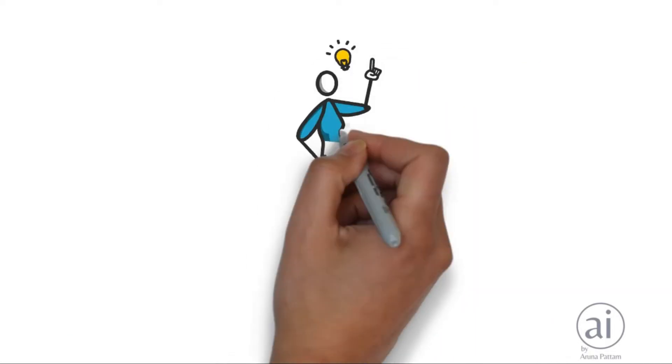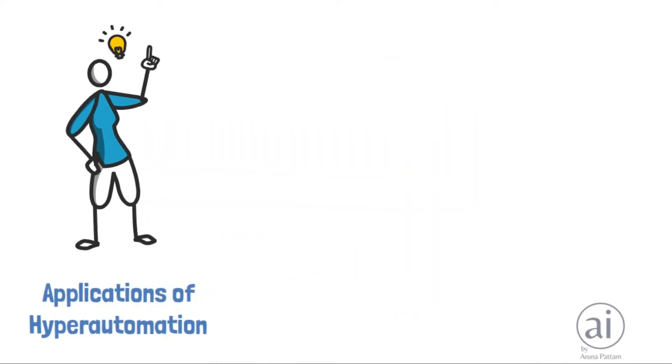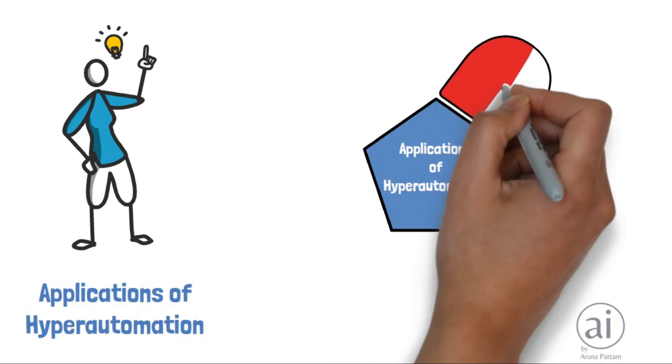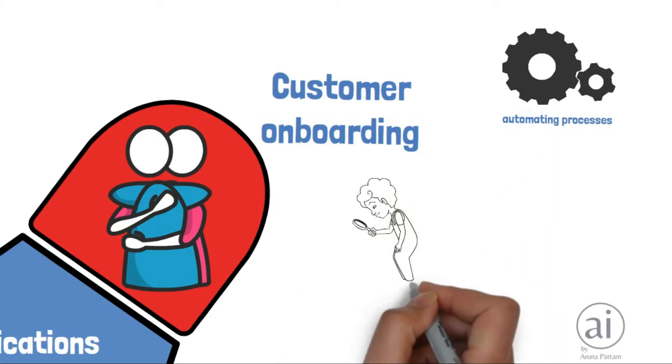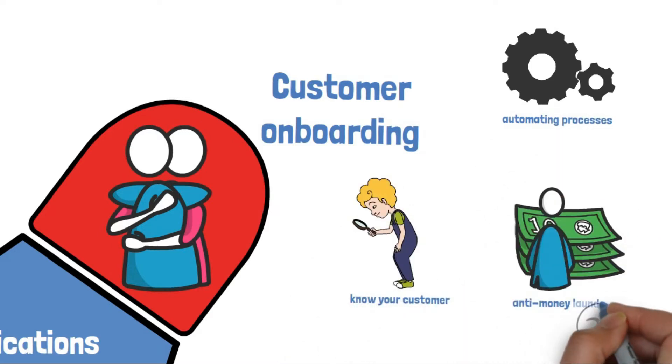Applications of hyper-automation include customer onboarding for automating the processes such as know your customer, anti-money laundering and so on.